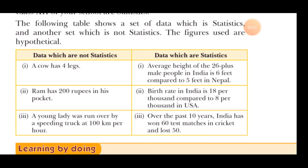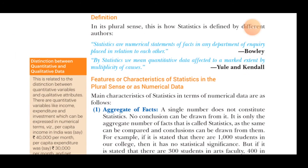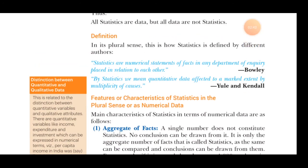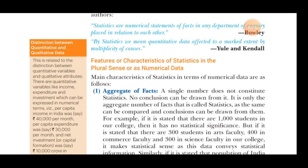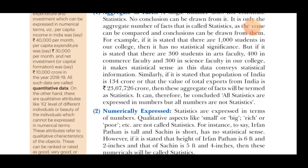For example, 'The cow has 4 legs' — this is data, but if there is another animal to compare with, it becomes statistics. Similarly, 'Ram has 200 rupees' is data, but it has no comparison with anyone, so it is not statistics in the plural sense. Statistics requires multiple comparable data points, not just a single isolated number.